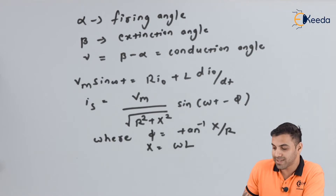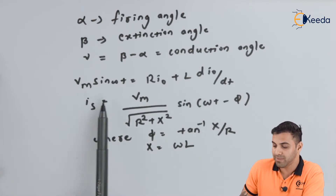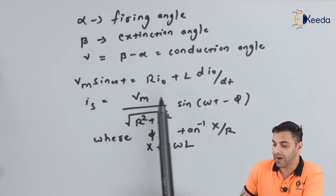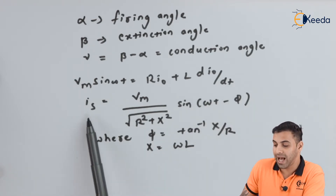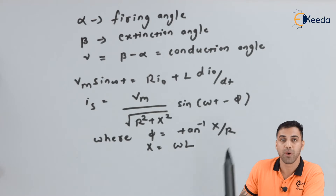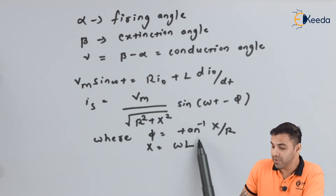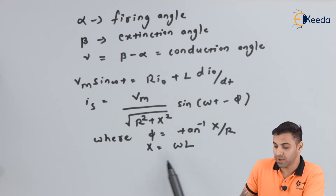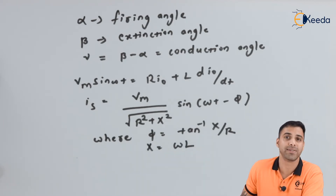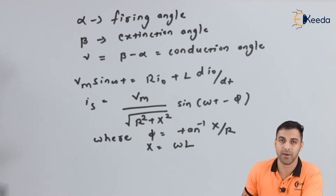If we apply Kirchhoff's voltage law in the loop, we get the equation: Vm sin(ωt) = R·i₀ + L·di₀/dt. Let I_sb be the steady state current, which equals Vm divided by √(R² + X²) multiplied by sin(ωt − φ), where φ = tan⁻¹(X/R), X = ωL is the reactance, and Z = √(R² + X²) is the impedance.